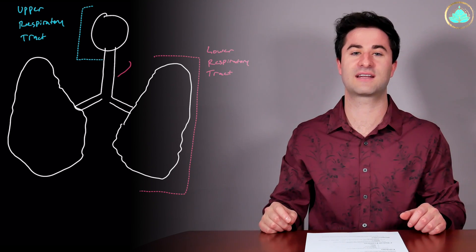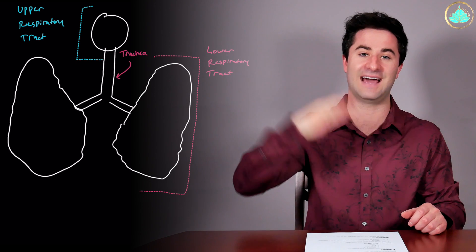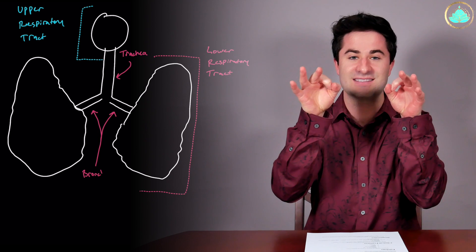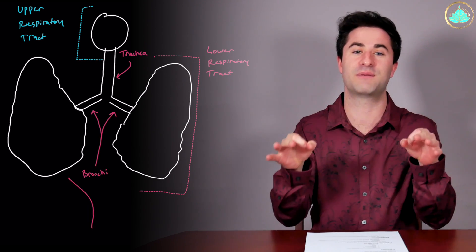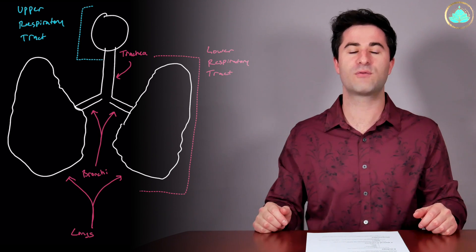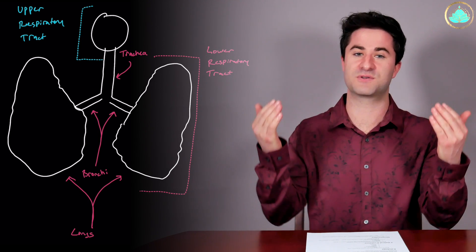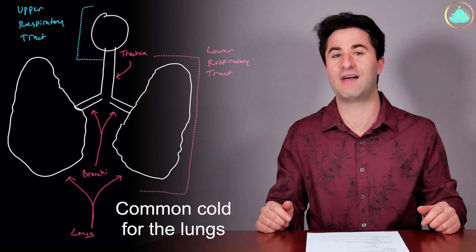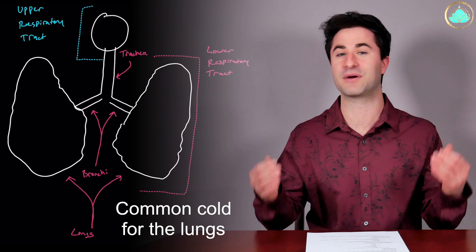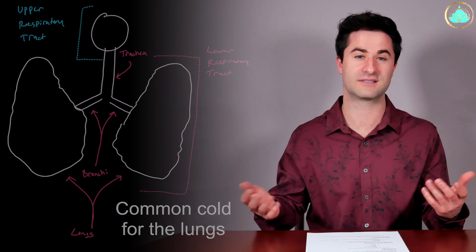The lower respiratory tract consists of everything else downward, including the trachea, also known as the windpipe, as well as the little tubes that connect your windpipe into your lungs and of course the lungs themselves. Whenever we have an infection in the upper respiratory tract, we basically call that the common cold. And so you can kind of think of acute bronchitis as being a common cold for your lungs.